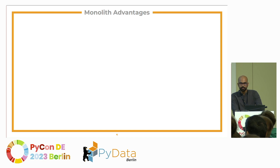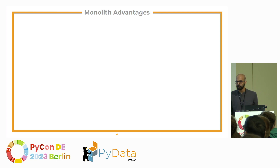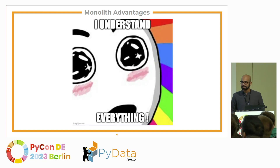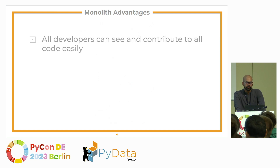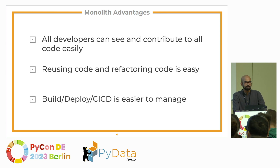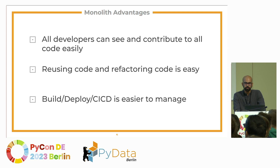Let's go to advantages. The main advantage is that when you start developing something, you don't know how to break it up or make it modular, especially because requirements change. At Corridor, for the first year, 80% of the code kept changing every month. Monoliths have the advantage that everyone understands everything happening within the application because everything is in one place. Developers can contribute to any part of the code more easily, you can reuse and refactor code quite easily, and deploying is much simpler. I'd encourage everyone: if you're working on a new project, don't think about microservices at the start. Just write your code, and you'll see how the structure evolves.